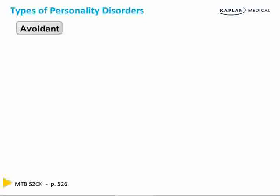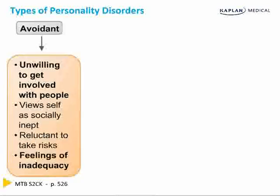Moving on to cluster C with avoidant personality disorder: these are people who are unwilling to get involved with others in social situations, view themselves as socially inept, are reluctant to take risks, and have feelings of inadequacy. They don't have many friends. The key difference between avoidant and schizoid: avoidant people actually want friends and want to be in social situations, but can't because they feel unworthy and won't take risks. Schizoid people are content — they don't want friends and are happy with solitary activities.